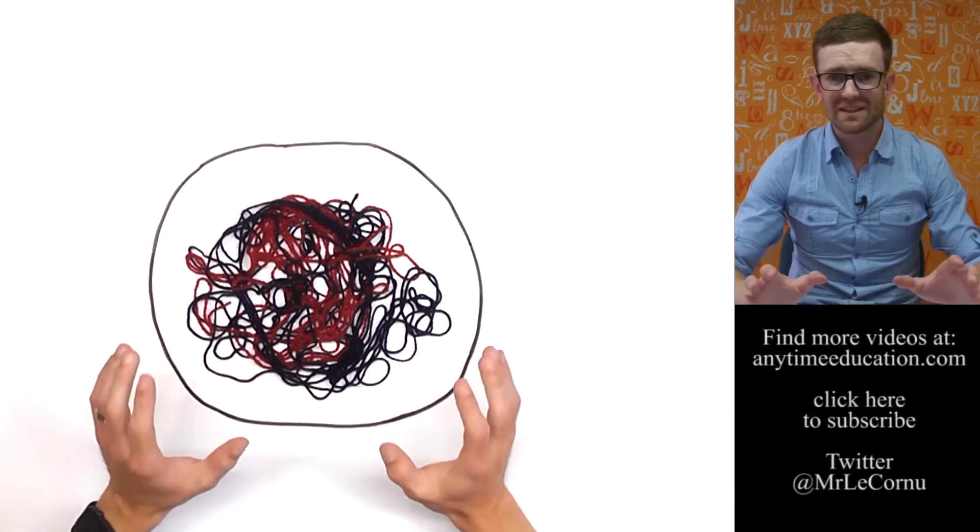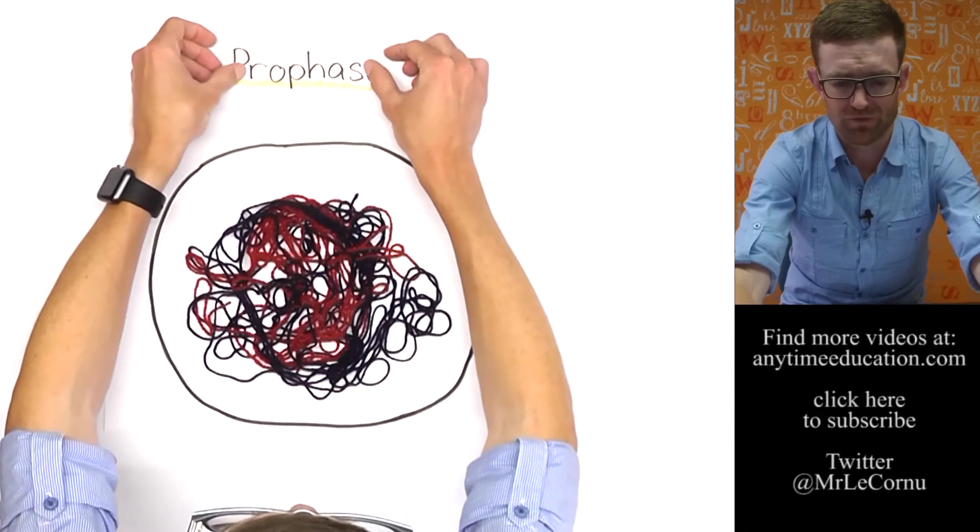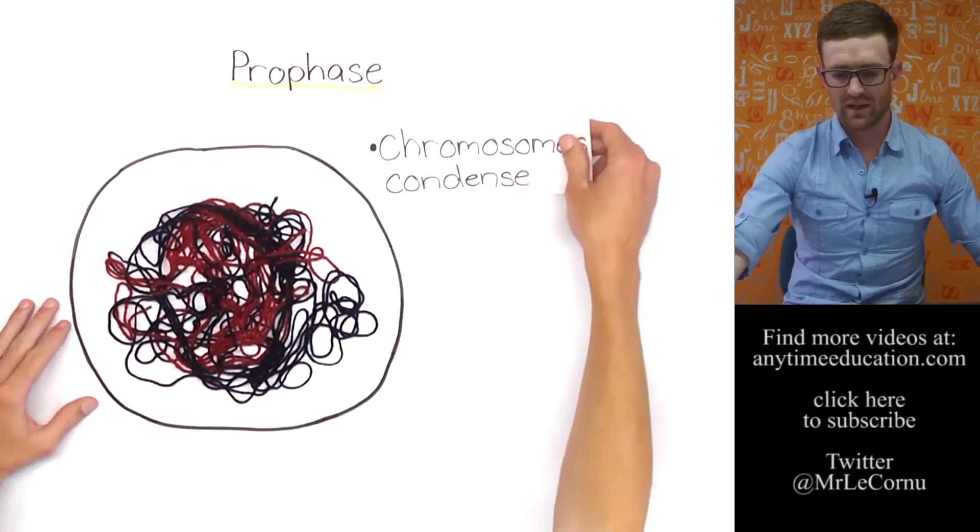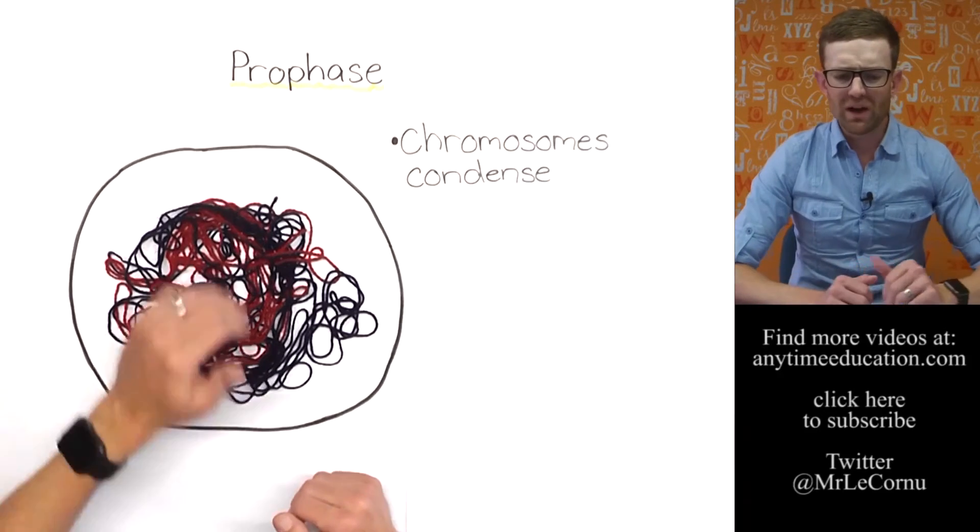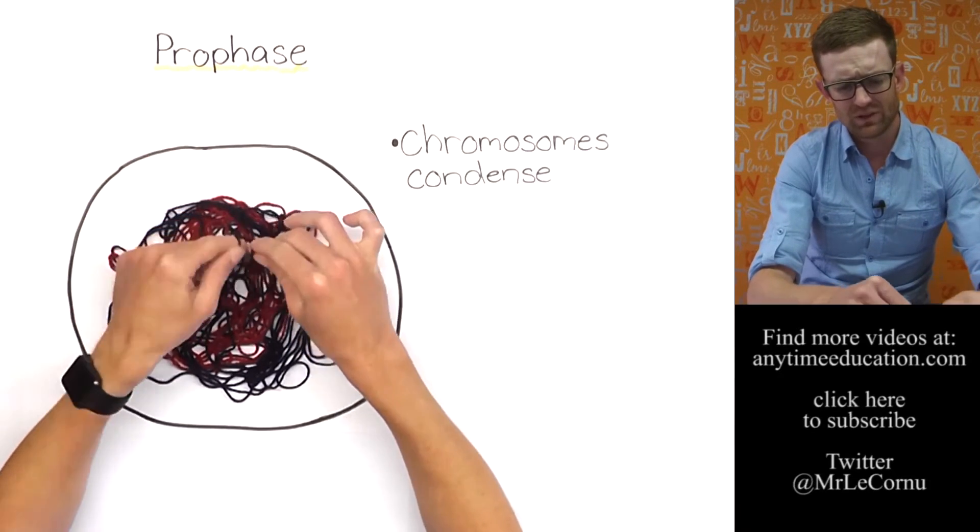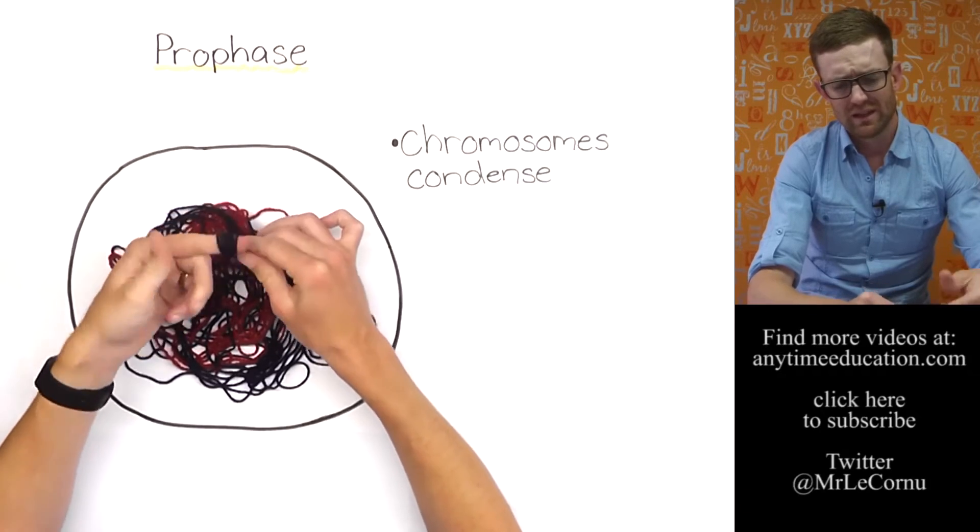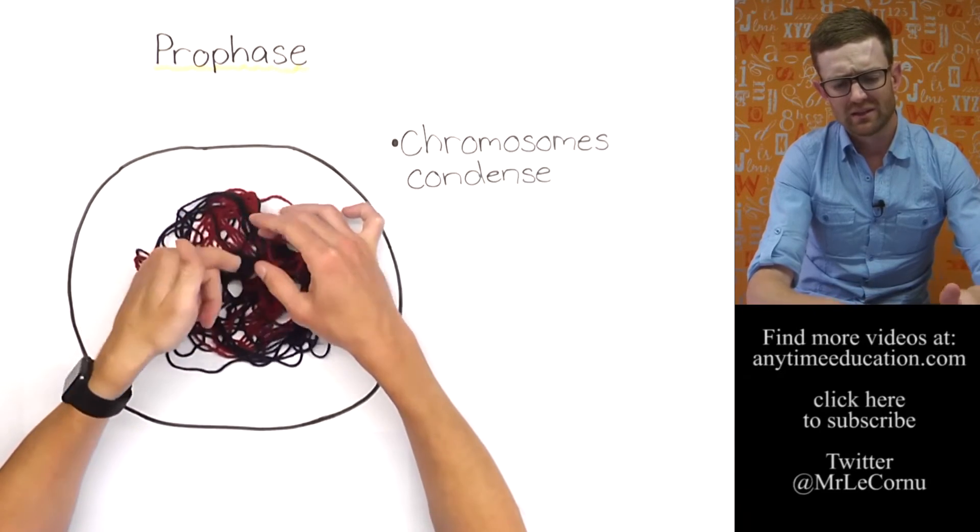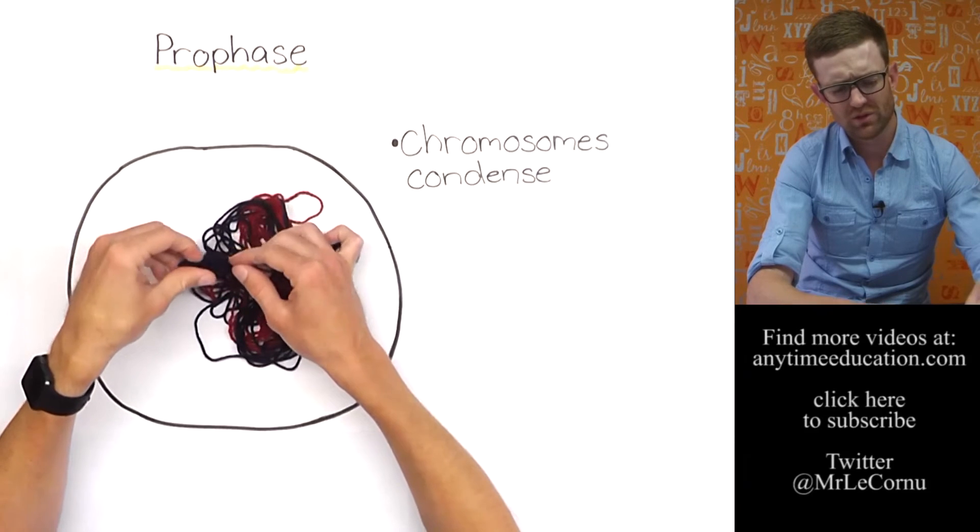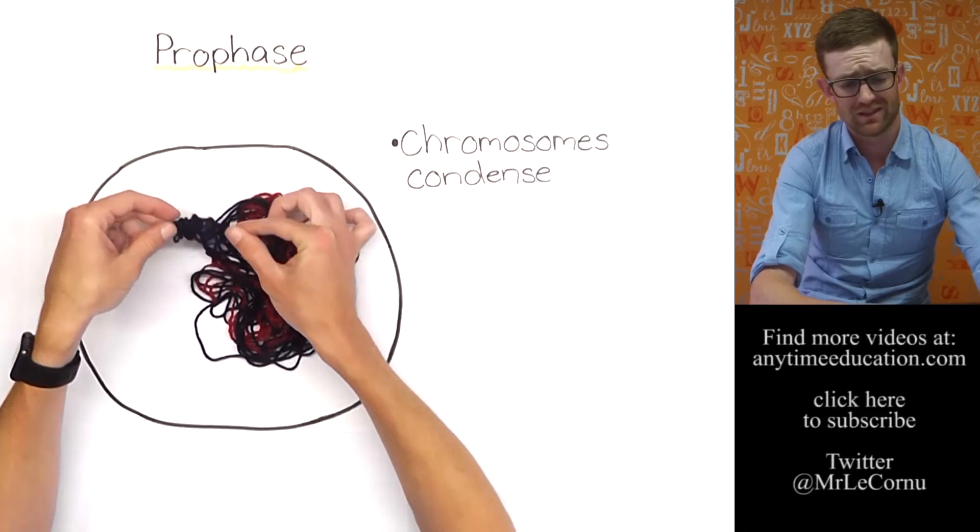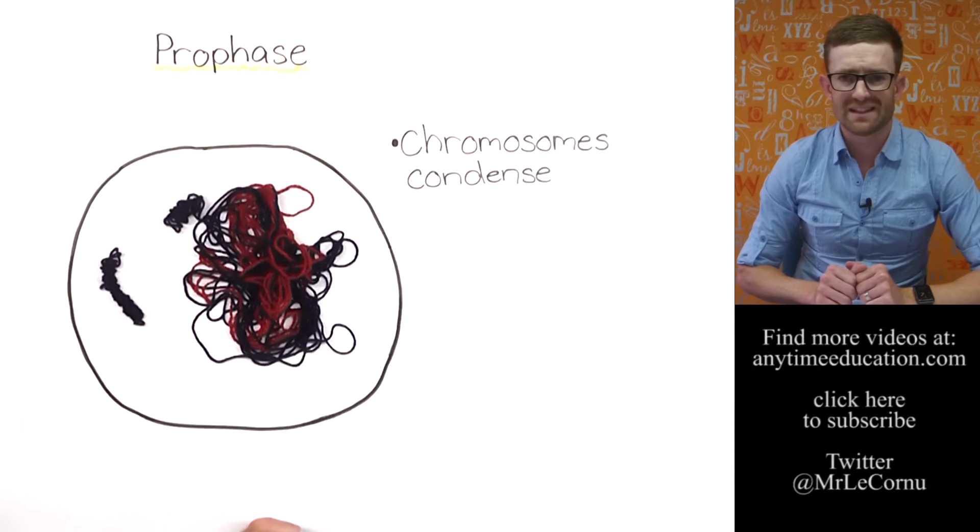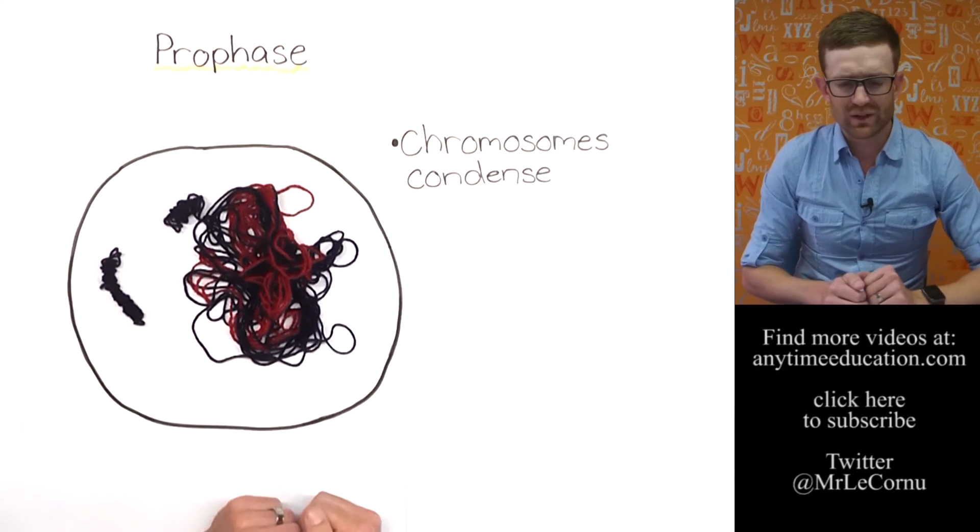So what happens is in prophase, which is our first phase of mitosis, the chromosomes condense. Let's bring in that point. And by chromosomes condense, what we mean is if we have some DNA here, what's going to happen is it's going to start to wind up and get more tightly packed so that we can form a tightly packed and organized chromosome. So if you imagine if I was to keep on going like that, I would end up with something that looks like this. There's a chromosome that has condensed.